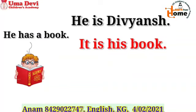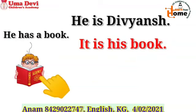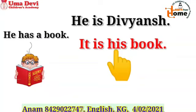Whenever we ask any question and 'whose' comes in it, we use 'his' or 'her.' Why have we used 'his' here? Because this book belongs to Divyans, and Divyans is the name of a boy. When something belongs to a boy or male person, we use 'his.' So in place of Divyans, you can use 'his': it is his book.